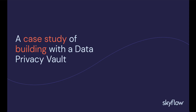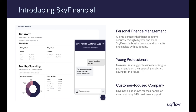The easiest way to understand how to work with a data privacy vault is to look at an example, so we're going to dive into a demo application. I created an app based on a fictitious company called Sky Financial. Sky Financial is a personal finance manager — clients connect their bank accounts securely through Skyflow and Plaid. Skyflow provides the data privacy vault while Plaid powers the connection to financial data. Sky Financial breaks down spending habits and assists with budgeting. For the demo, we'll focus on their award-winning 24/7 customer support — showing the data privacy vault, data governance rules, privacy controls, and MongoDB.